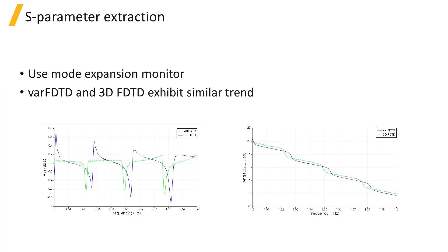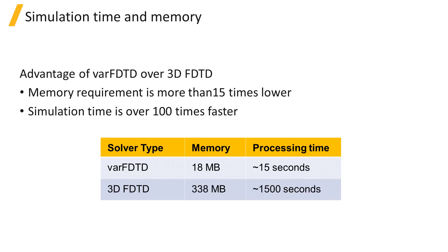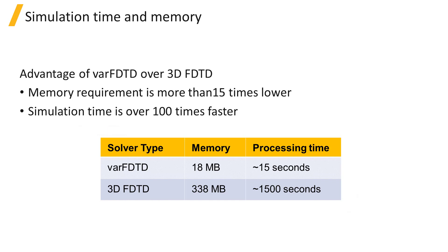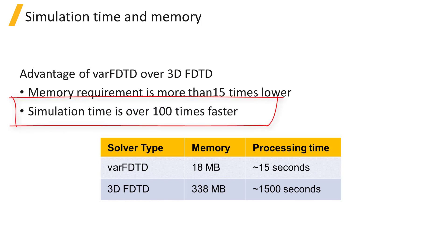You can see they exhibit the same trends. Although there is still a shift in the frequency as we saw with the power spectrum, the shift is not important to the design since the resonant frequency is very sensitive to fabrication. This table shows the simulation memory and time to get the results using the same computer. The simulation memory requirement is more than 15 times lower, and the simulation time is more than 100 times faster when using VARFDTD compared to 3D FDTD.